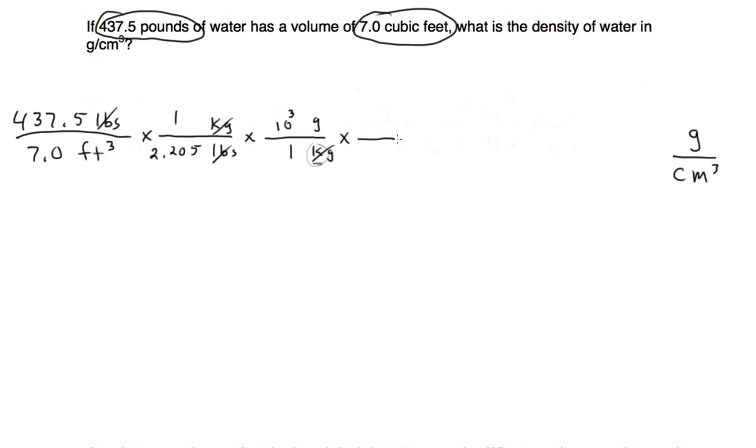So now we're going to change feet cubed which is on the bottom into centimeters cubed. So we're going to have to go from feet to meters to centimeters and then we're going to cube everything. So feet is going to go on top and meters on the bottom. I know that one meter is 3.28 feet, that's our conversion and then we're going to cube it.